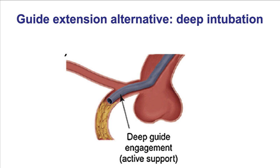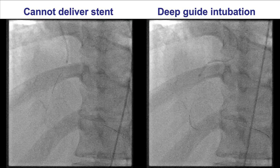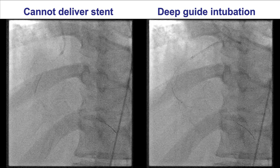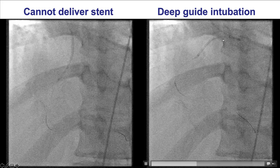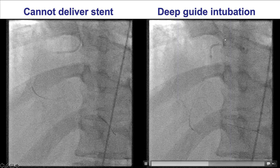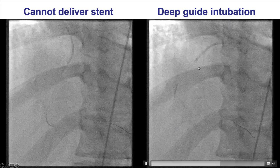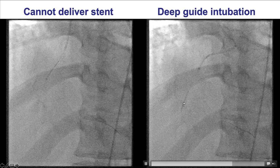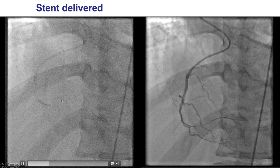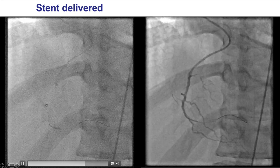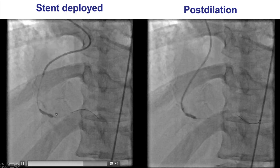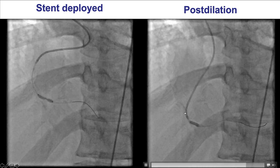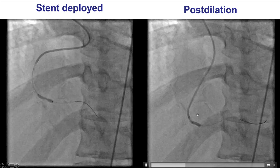There is, however, an alternative to using guide extensions if they're not available, which is to deeply intubate the guide catheter. This is mainly done for the right coronary and much less so for the left main. This is an example of challenging delivery in a complex right coronary artery lesion. Typically, the deep intubation is done by clockwise rotation and advancement. You can see the guide here is advanced to the proximal and mid-segment of the right coronary artery, helping with stent delivery. Eventually the guide catheter came all the way down almost to the distal RCA, facilitating post-dilation of the stent and achieving a nice final result.